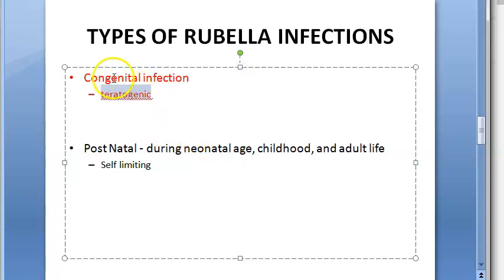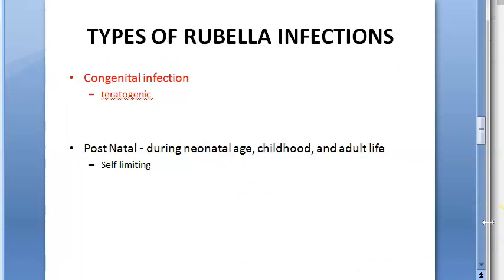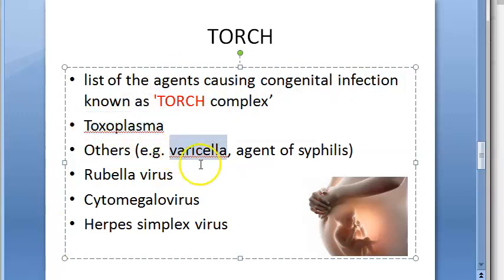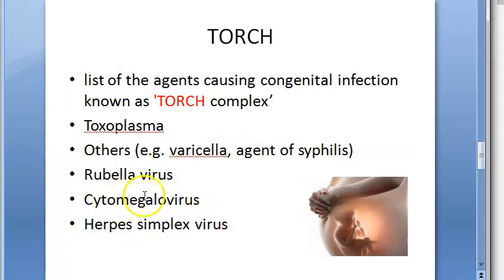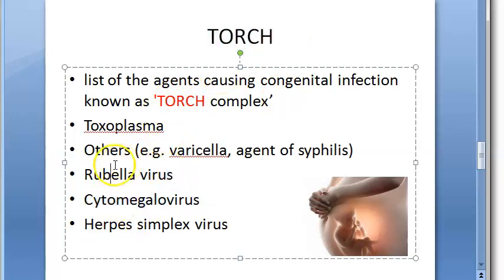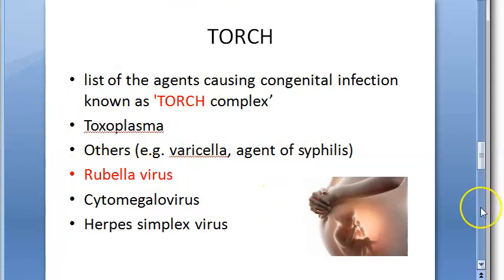The real problem is congenital infection, because rubella is teratogenic. If the mother gets infected, it causes anomalies in the fetus — this is Congenital Rubella Syndrome. This is part of the TORCH complex: T for Toxoplasma, O for Others (varicella, syphilis/Treponema pallidum), R for Rubella, C for Cytomegalovirus, H for Herpes Simplex Virus.